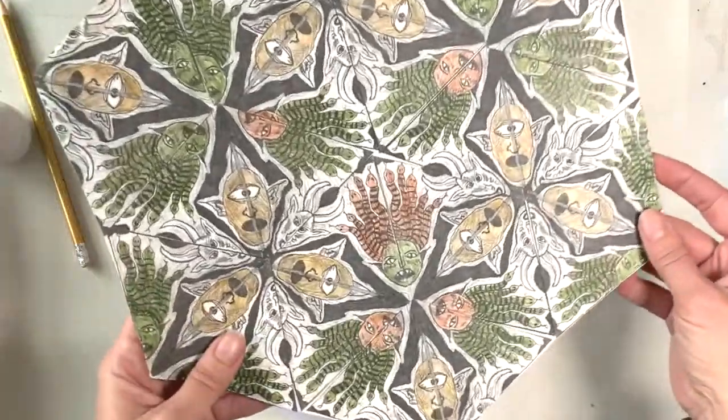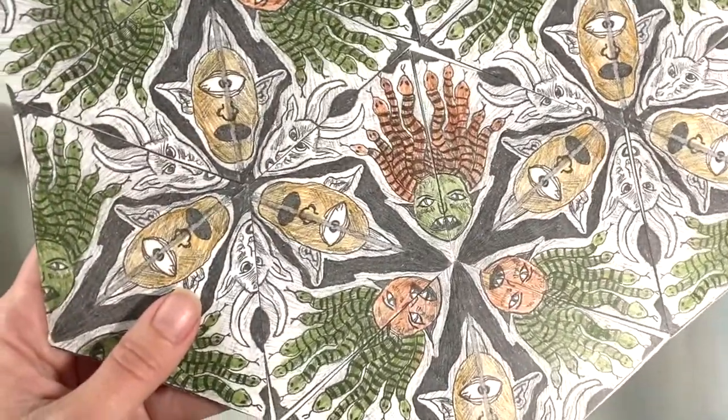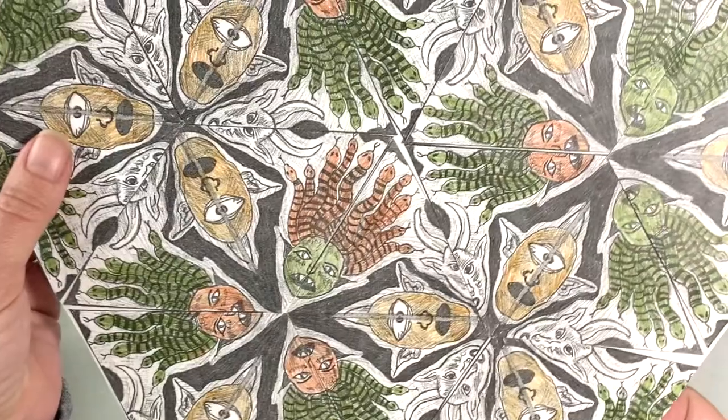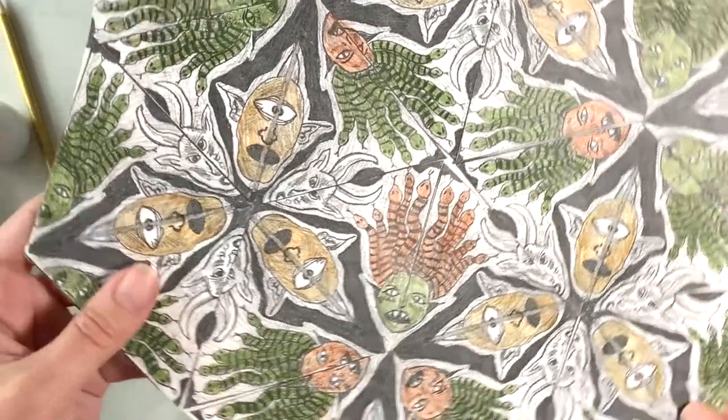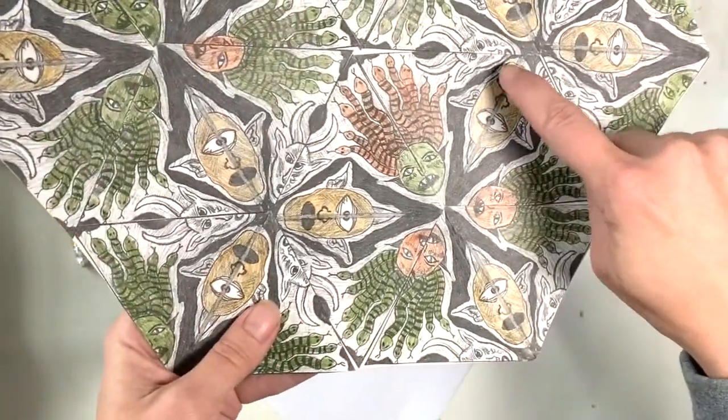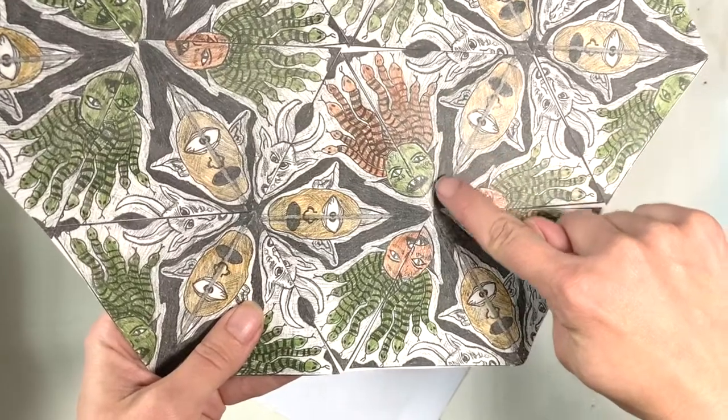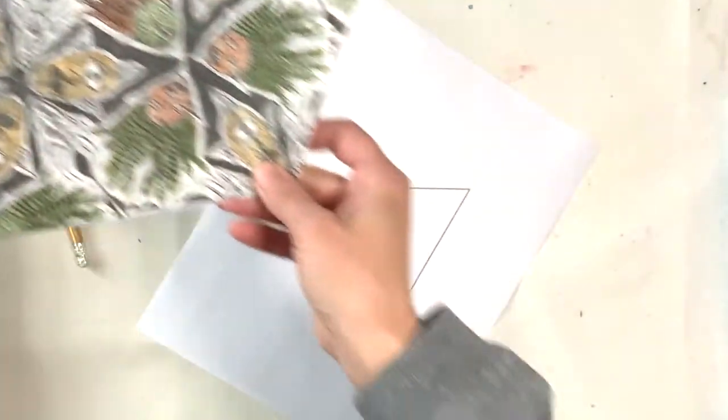And then it just rotates and reflects. So there we go close up. This is kind of the idea that we're doing, but we're going to be doing the high-tech version using Google slides to replicate the tile instead of a photocopier.